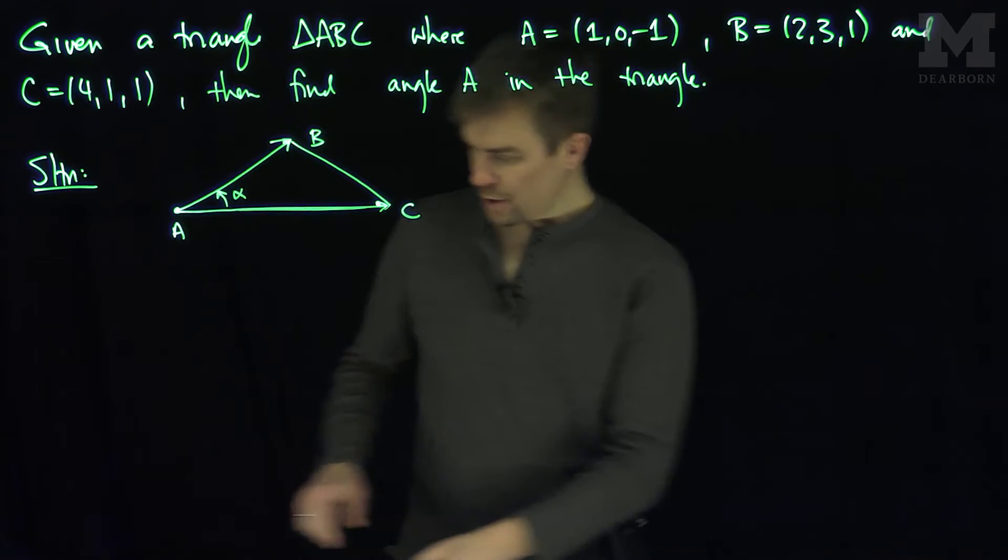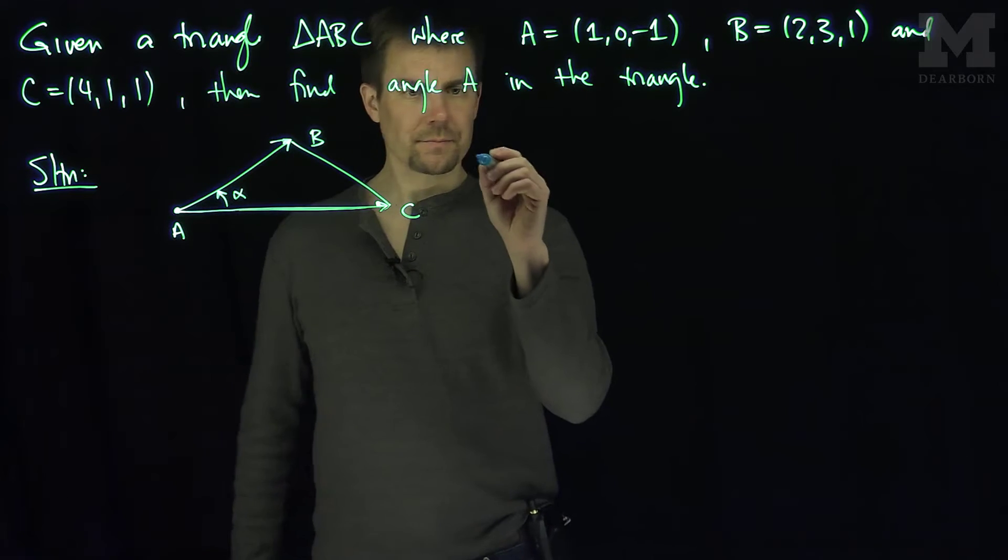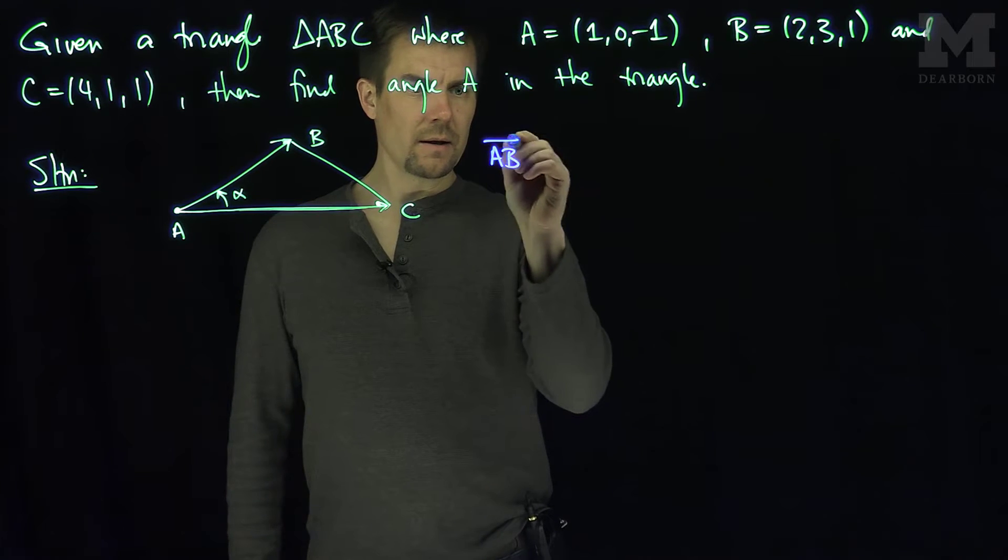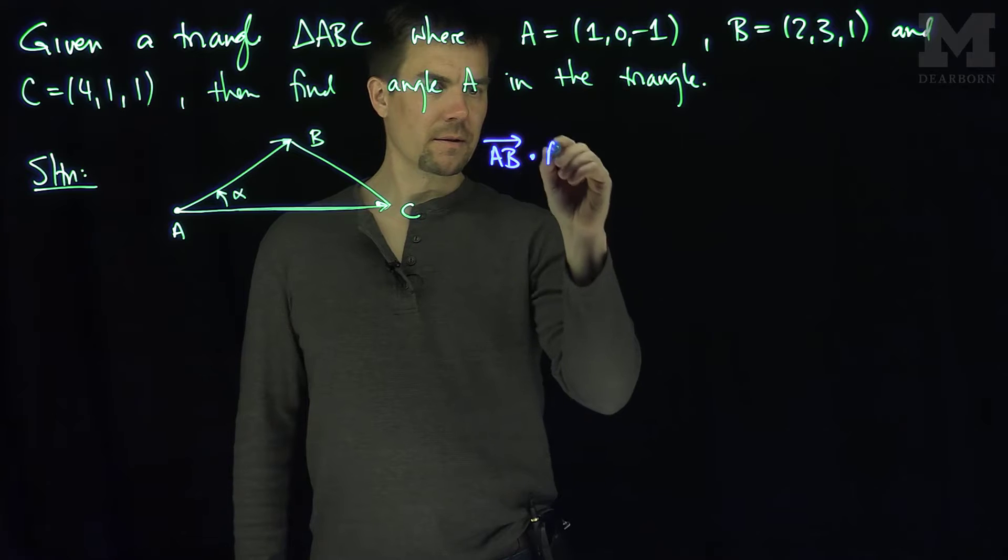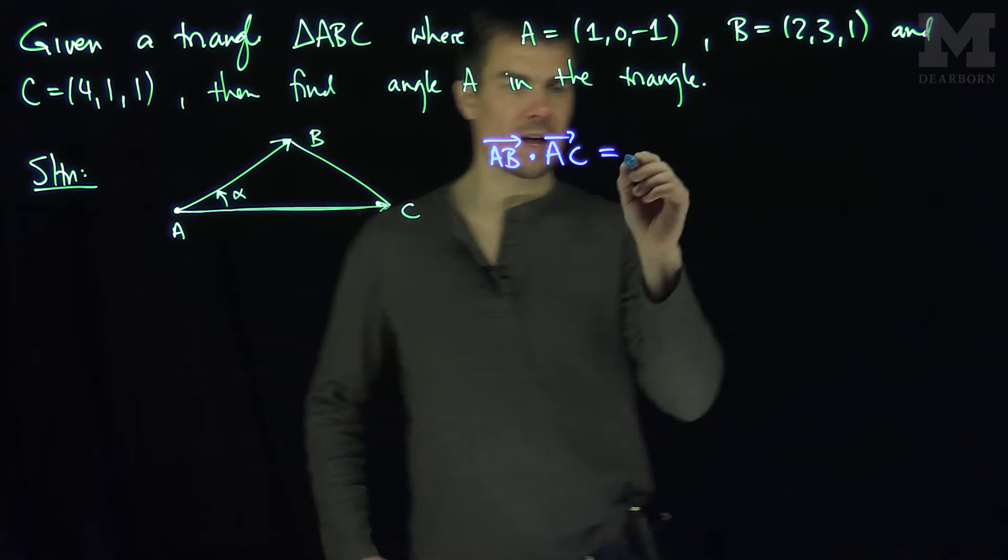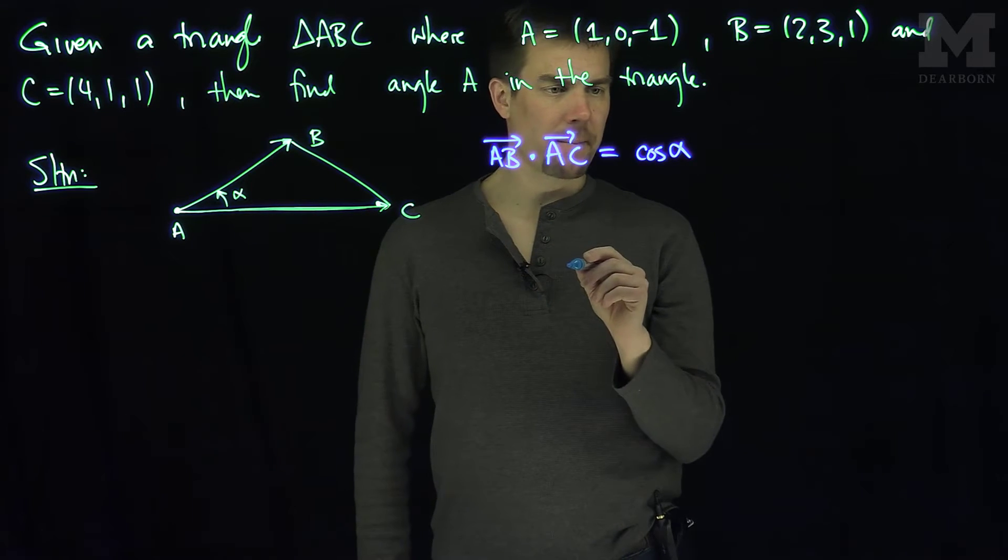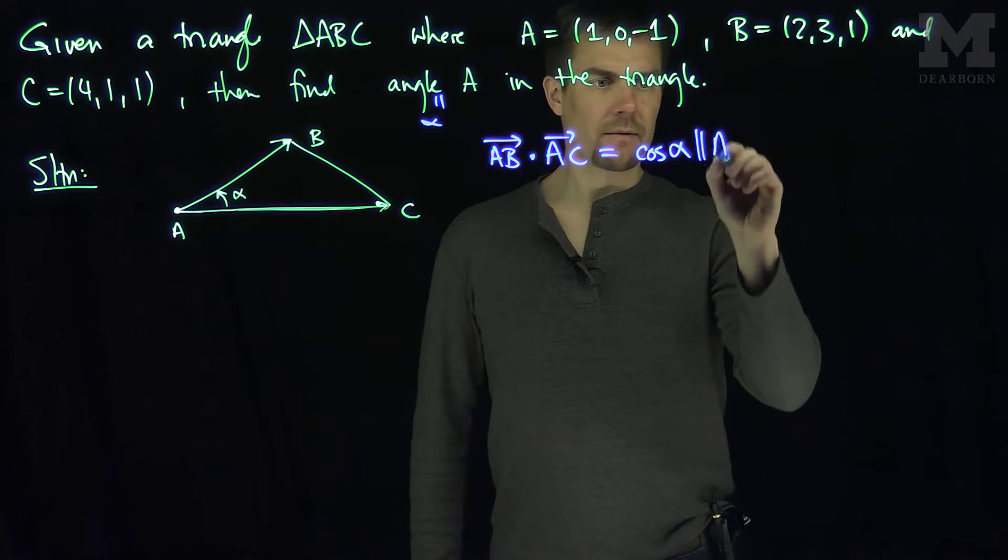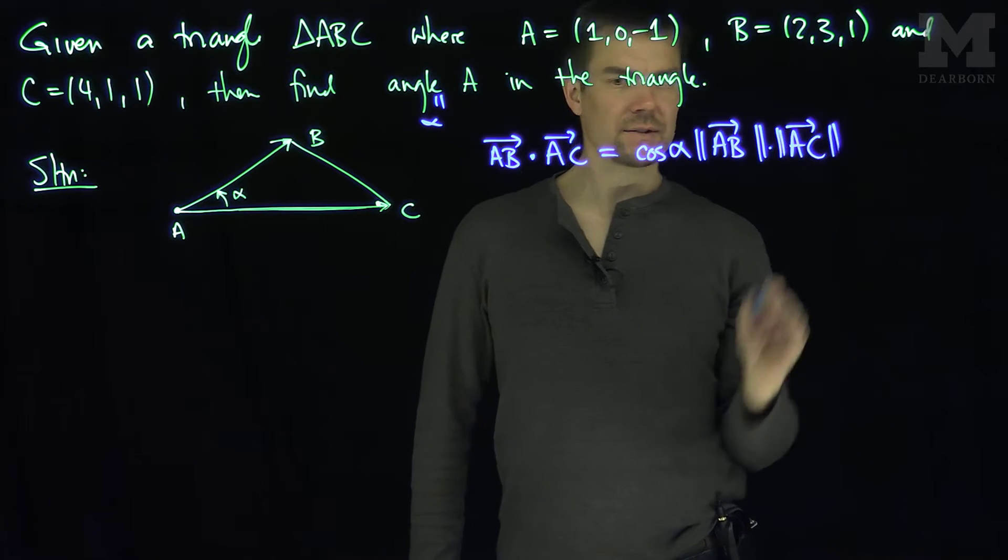And I know how to find angle A using dot products. I know that the vector AB dot the vector AC, the dot product, is always the cosine of the angle between them. So that would be the cosine of alpha, the angle we're after, angle A, times the length of AB times the length of AC.